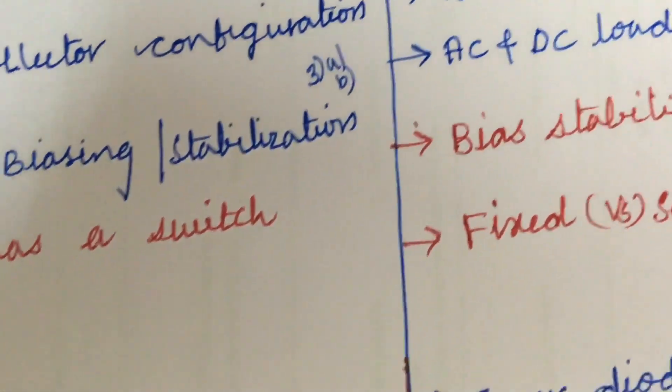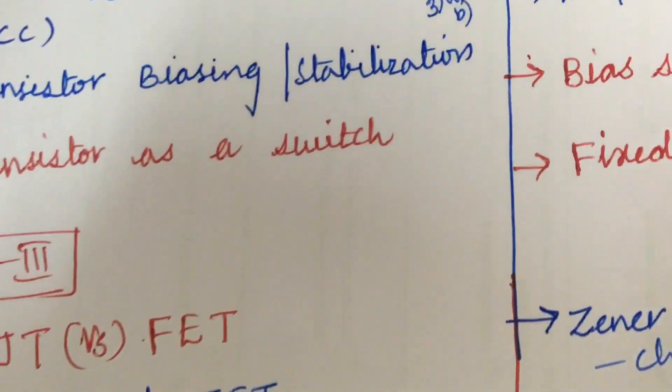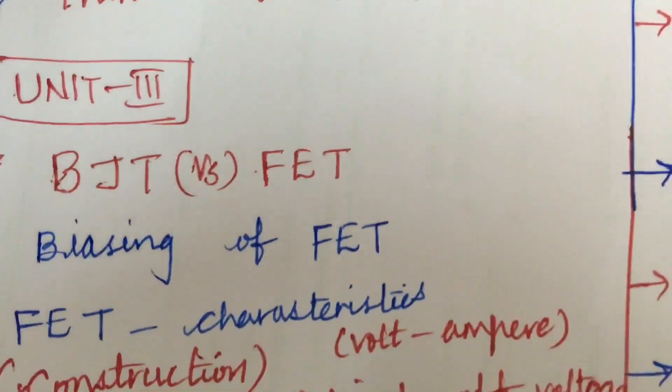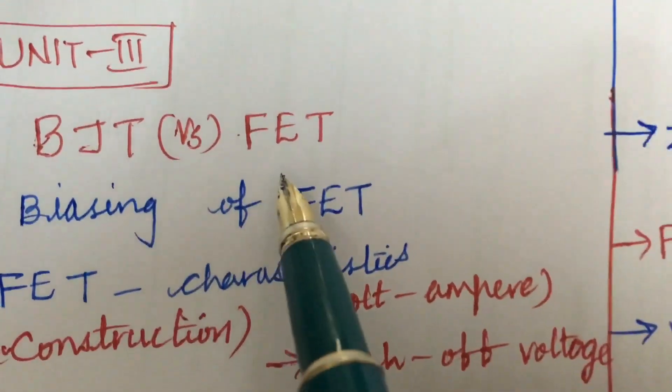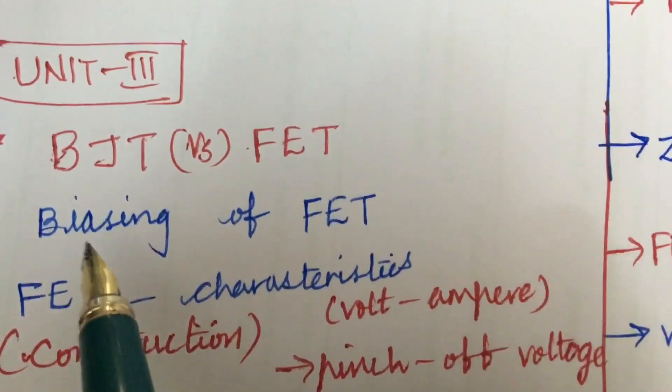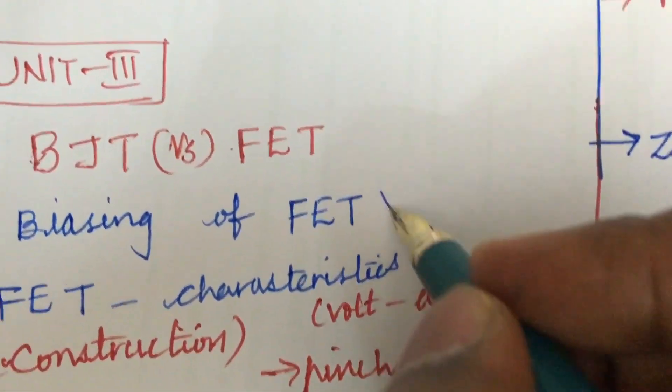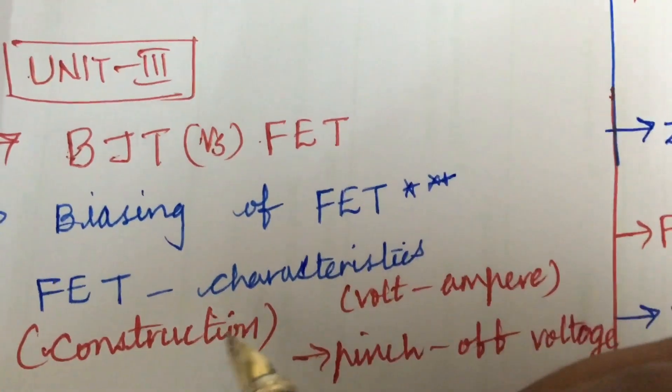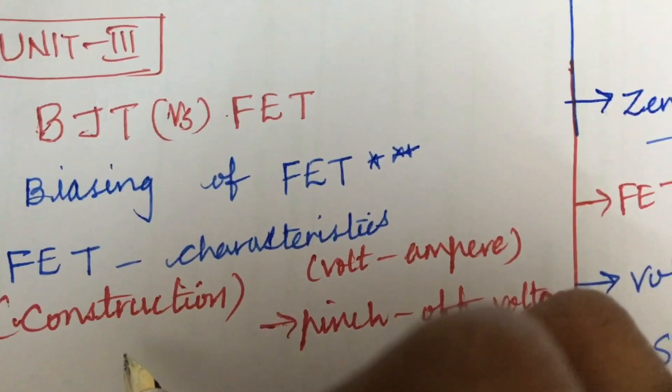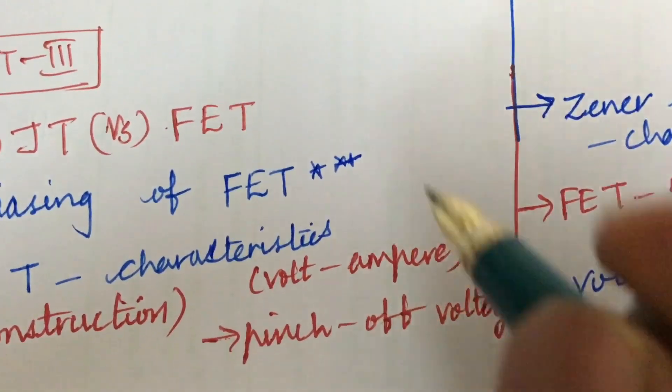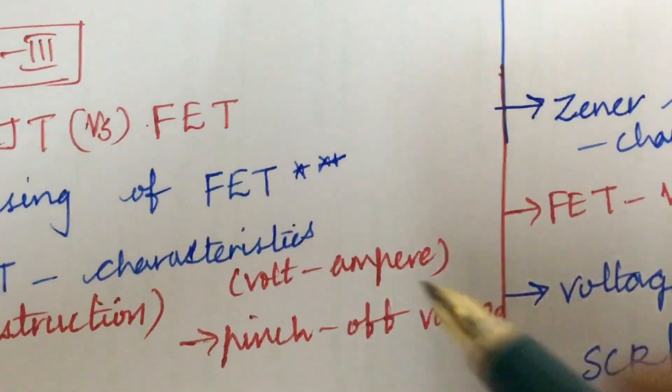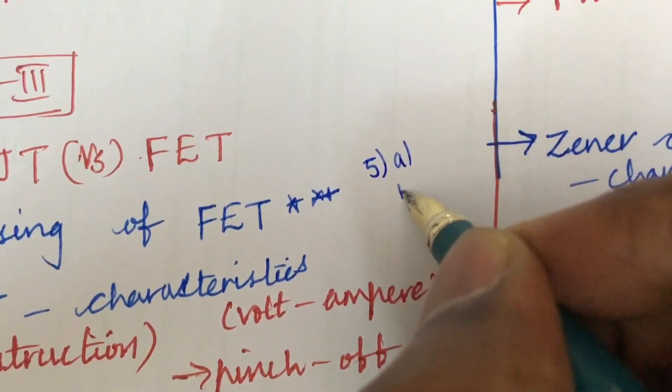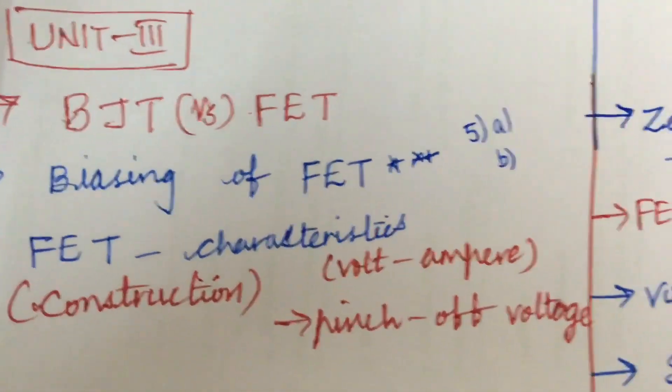I have uploaded a video on how to take your theory paper and to score good marks. Please share my channel and subscribe to it. BJT versus FET differences and biasing of FET is said to be very important and gunshot question. The characteristics of FET along with the construction, the voltage ampere, and pinch-off voltage is said to be very important. This is said to be 5A as well as 5B in the question paper.